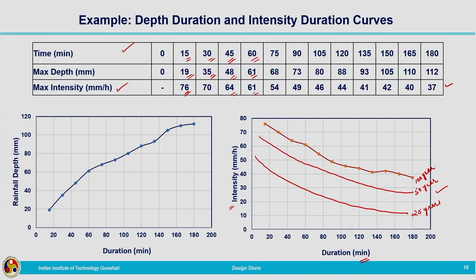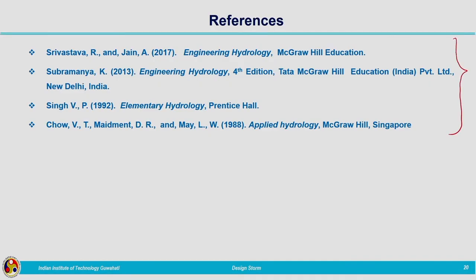While deriving the intensity-duration-frequency curve, a suitable probabilistic distribution must be fitted to the data. Based on that, the frequency of occurrence and magnitude of events corresponding to certain return periods are found. For different return periods and varying durations, we can derive different curves to form the complete IDF curve. These are the types of problems related to depth-duration and intensity-duration curves, and exercise problems can be found in the reference textbooks.